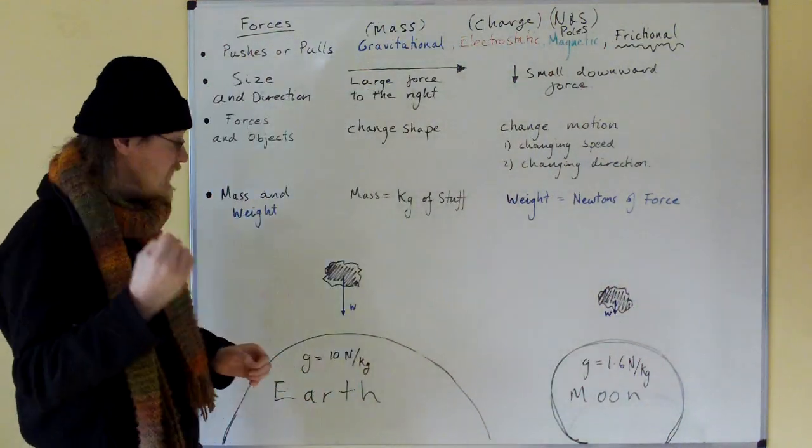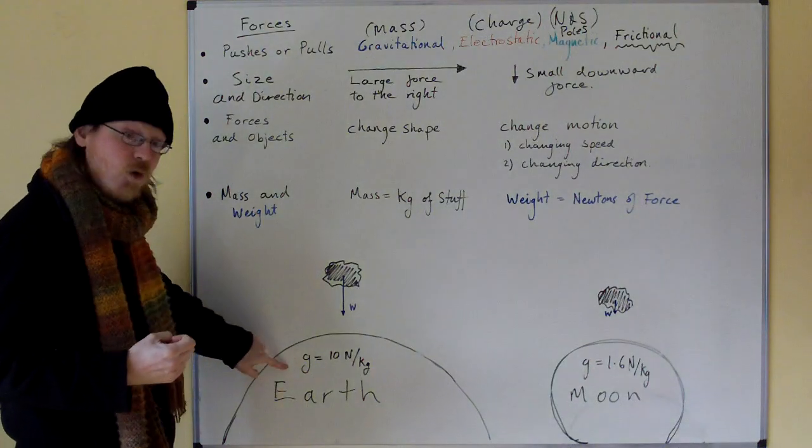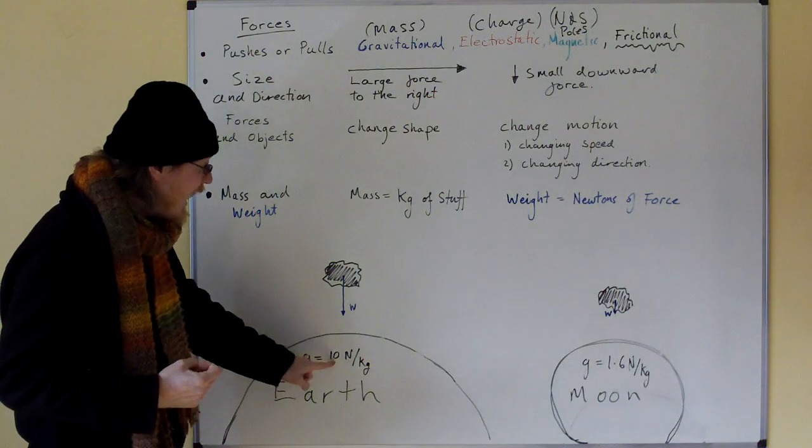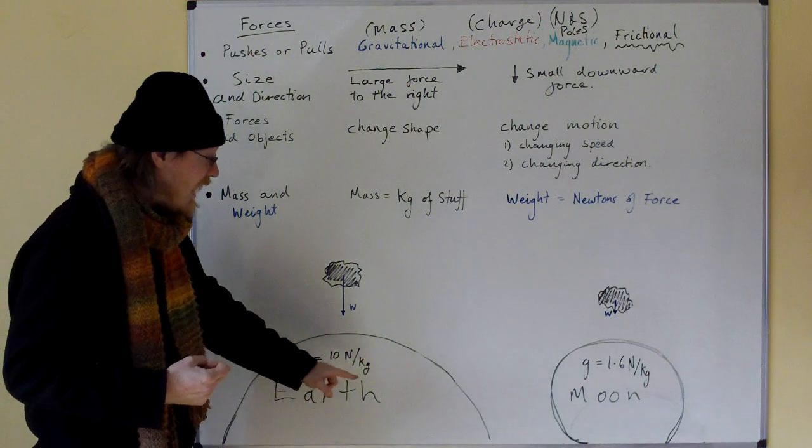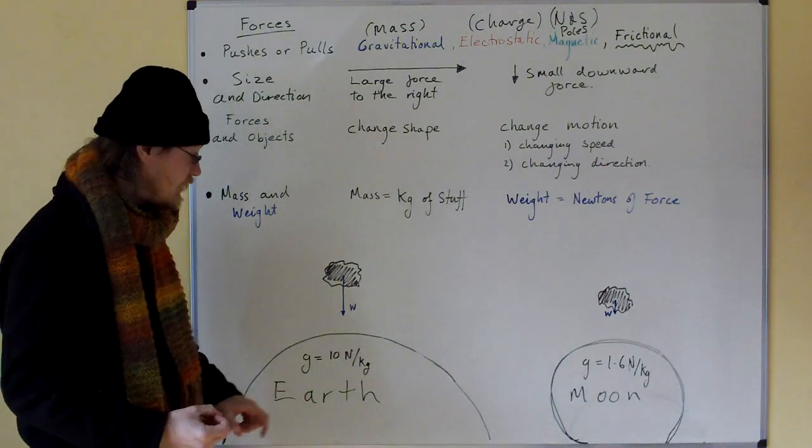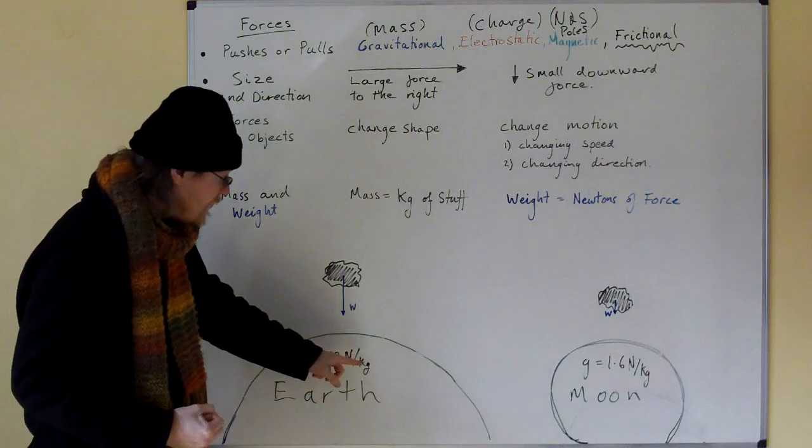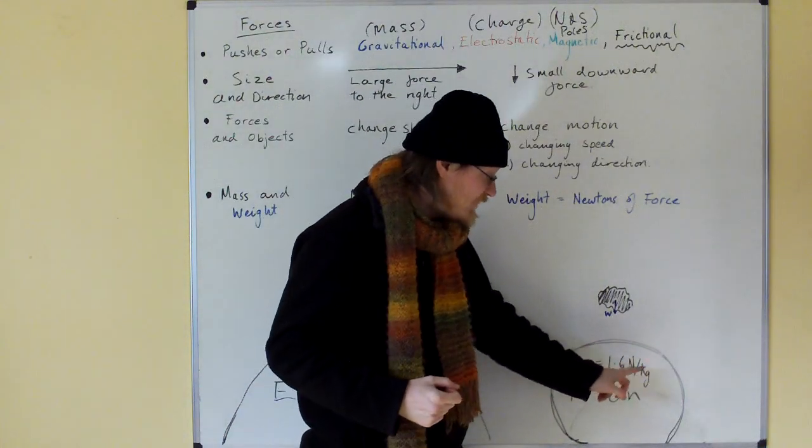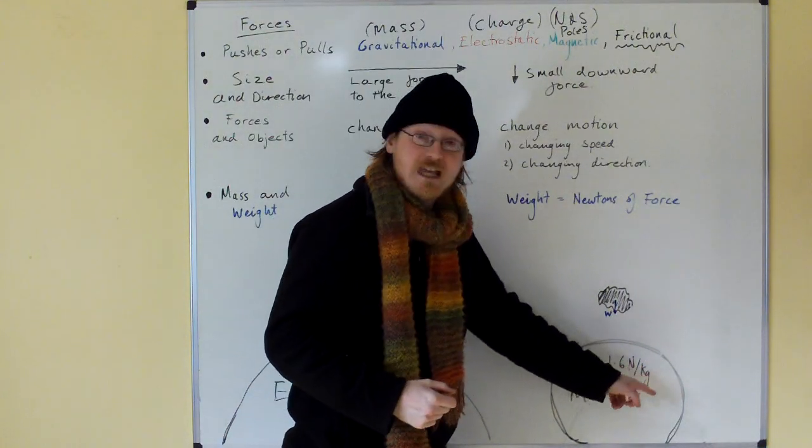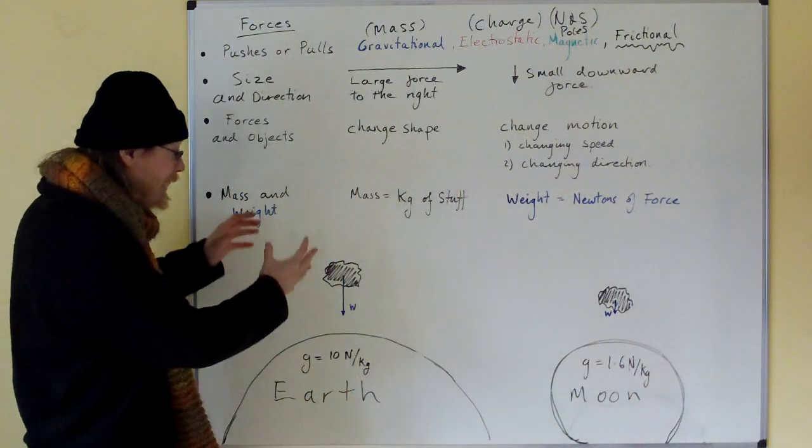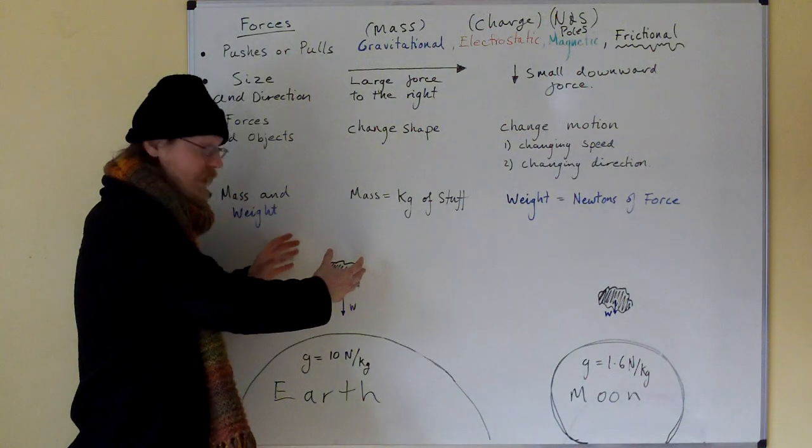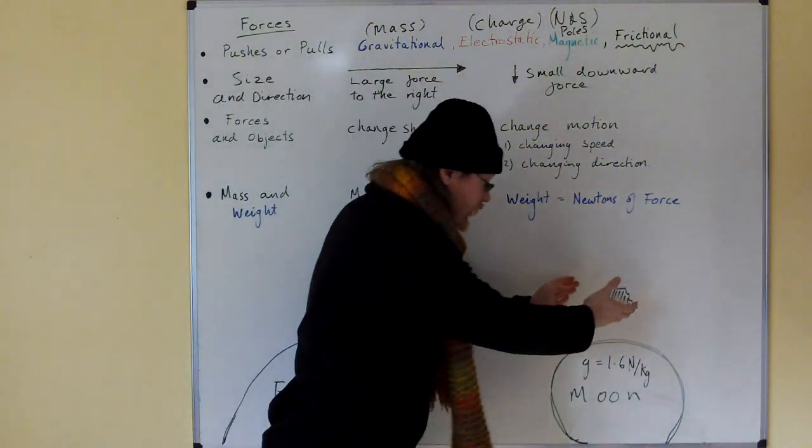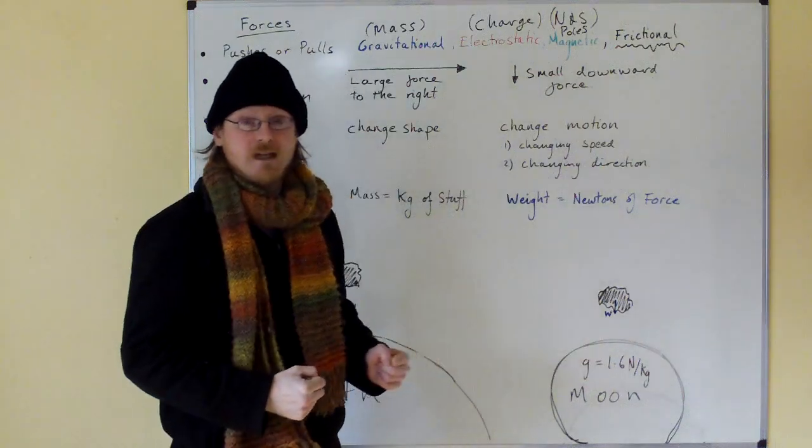The weight, however, is different. The force of gravity on Earth gives you 10 newtons of force for every kilogram of mass. On the Moon, you only get 1.6 newtons of force for every kilogram of mass. So we've got the same amount of stuff in this rock, it's just got less weight on the Moon because gravity is weaker.